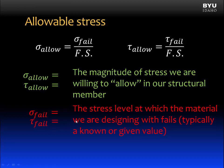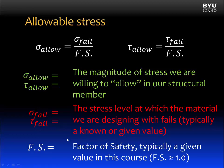Failure stress is the stress level at which the material we are designing with fails, and that's typically a known or given value. In this class it will be given in the problem statement, or we can find it in a reference such as a table of material strengths. The factor of safety is also typically a given value in this course, and it must always be greater than or equal to 1. If the factor of safety were less than 1, then sigma allowable would be greater than sigma fail, and that wouldn't make any sense.